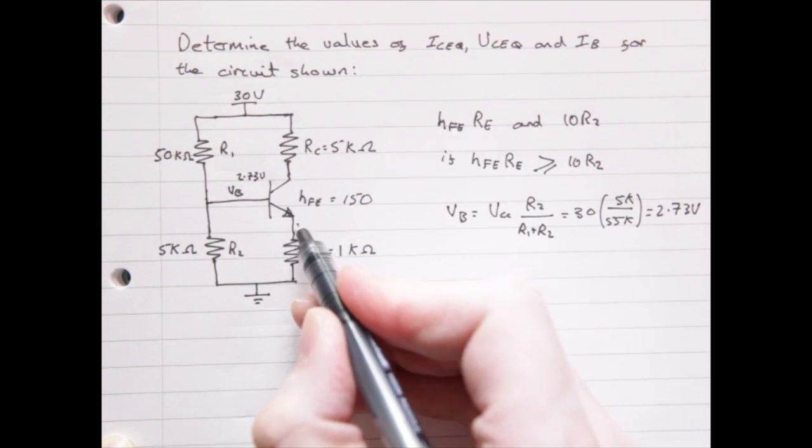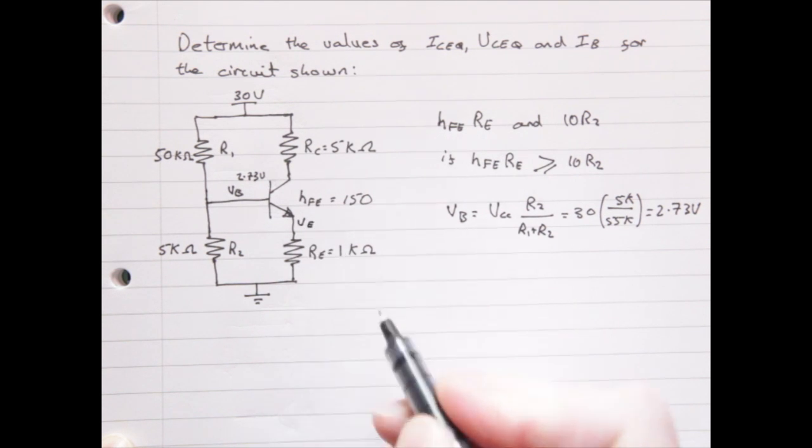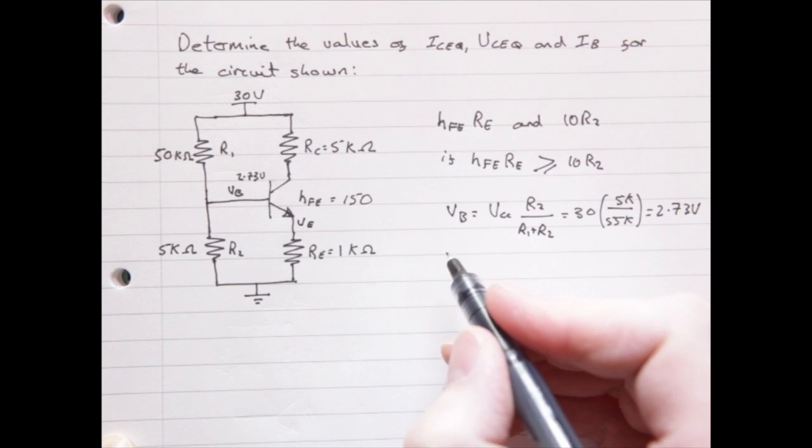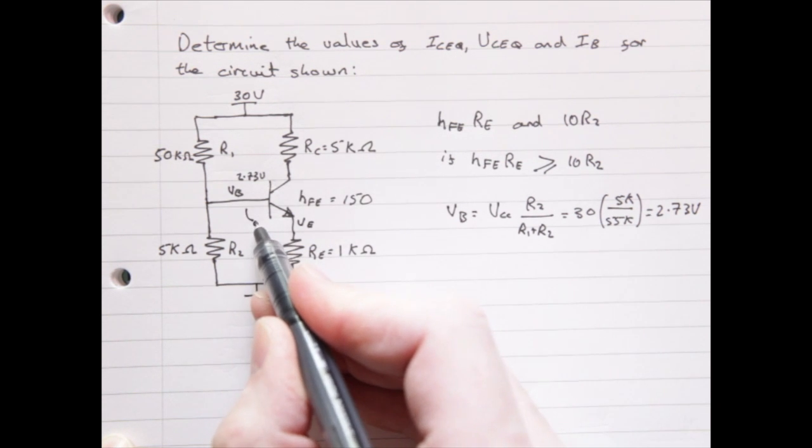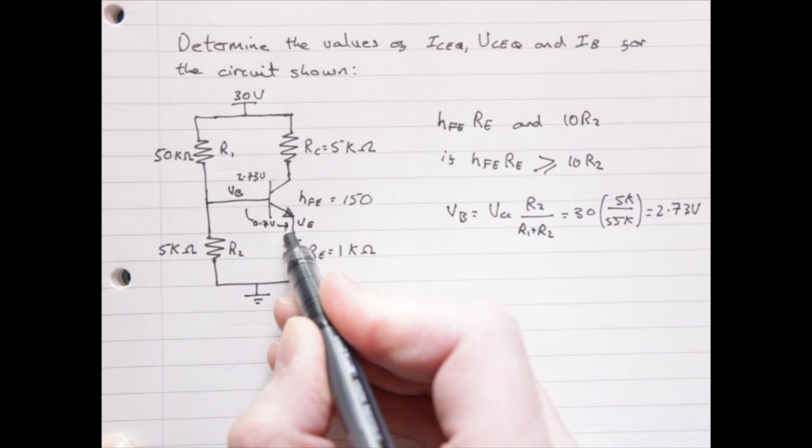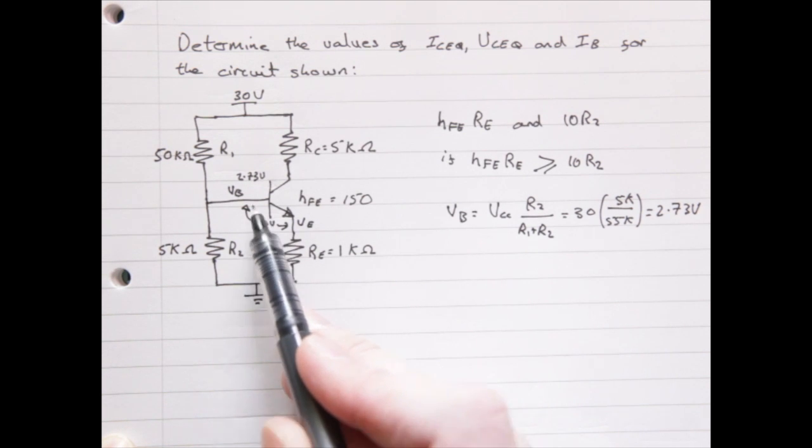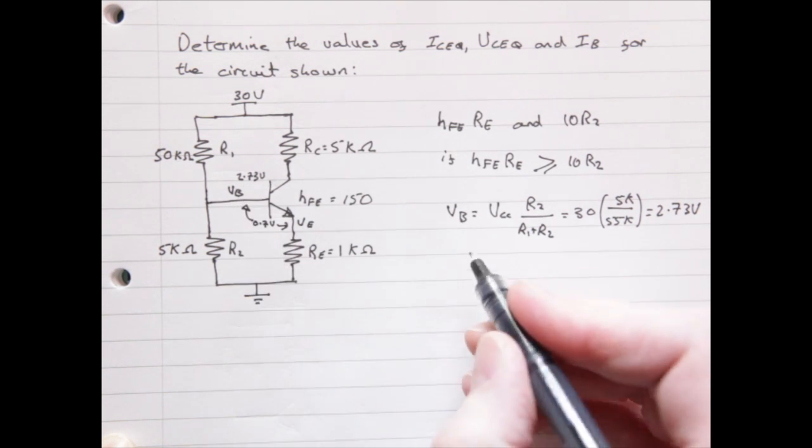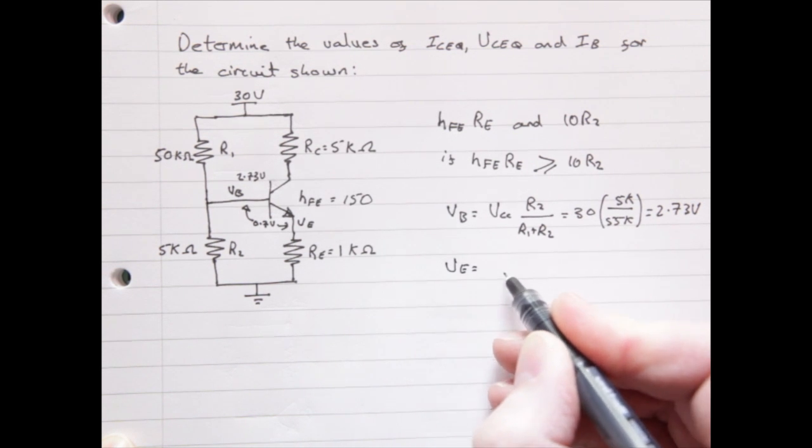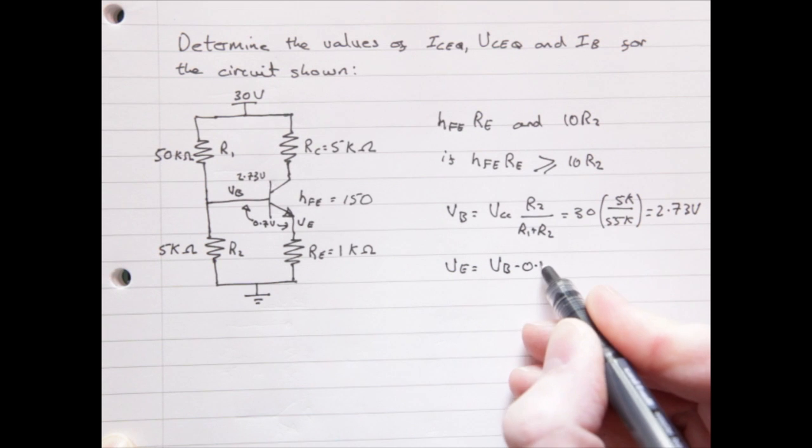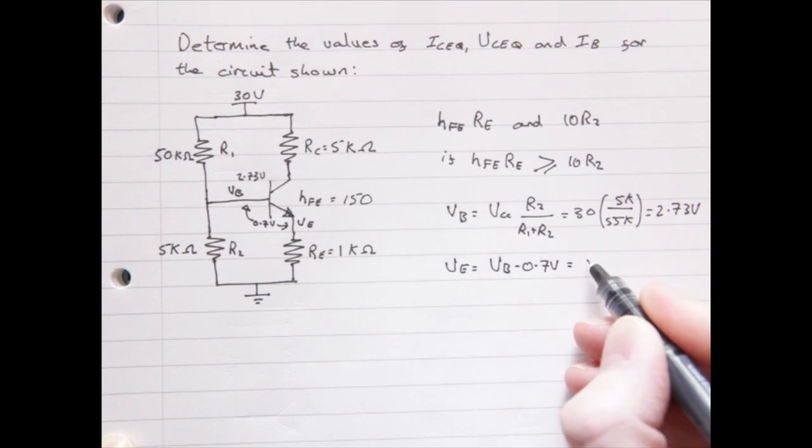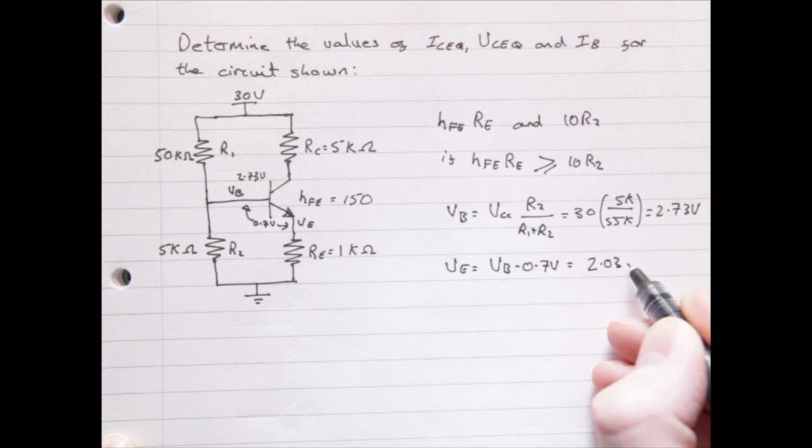Now, our next step will be to calculate the voltage at the emitter terminal. Well, we know that there's a 0.7 volt drop between the base and the emitter. So, the voltage point at the emitter must be 0.7 volts less than the voltage at the base. So, we subtract 0.7 volts from our voltage at the base. This gives us 2.03 volts.